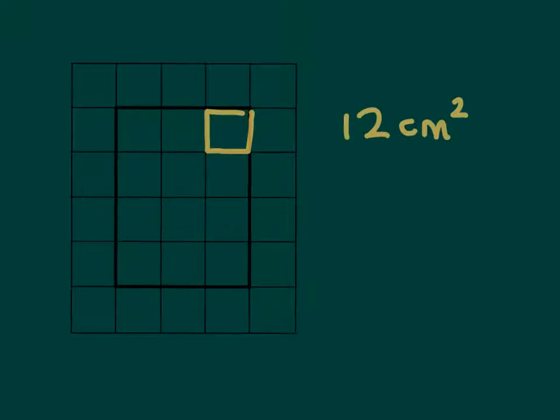The little number 2 here represents cm², which means cm times cm.